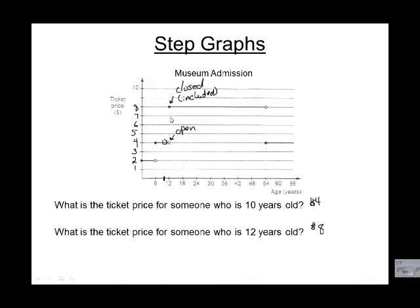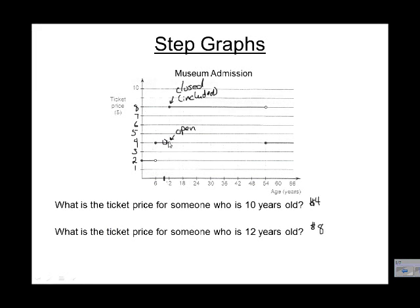So someone that's 12 is $8, and we know that because it's closed there. Now, the reason that we put down these dots is to show where the change occurs. If their birthday was tomorrow and they were 11.99 years, they're still going to be $4. So there's no change between 6 and 11, but then as soon as you have your 12th birthday, it jumps up.